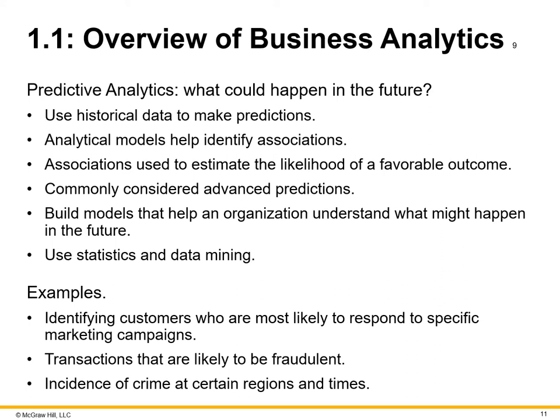Predictive analytics uses historical data to make predictions about what could happen in the future. Its analytical models help identify associations — looking at how one element correlates or aligns with another — and those associations are used to estimate the likelihood of a favorable outcome. Just like the weather: when we look at precipitation, temperature, and other parameters, we determine whether it's going to rain. Weather forecasters use a meteorologist's predictive analytics to tell the weather based on multiple variables — the same thing happens here, where we're looking at multiple patterns and sets of data that tell a potential outcome of the future.